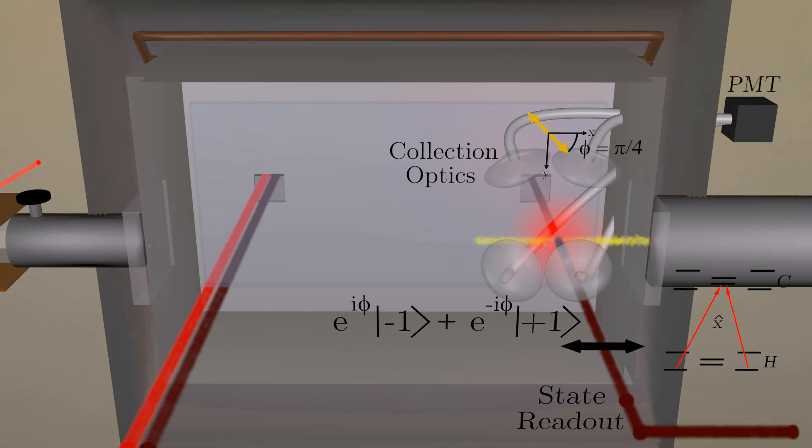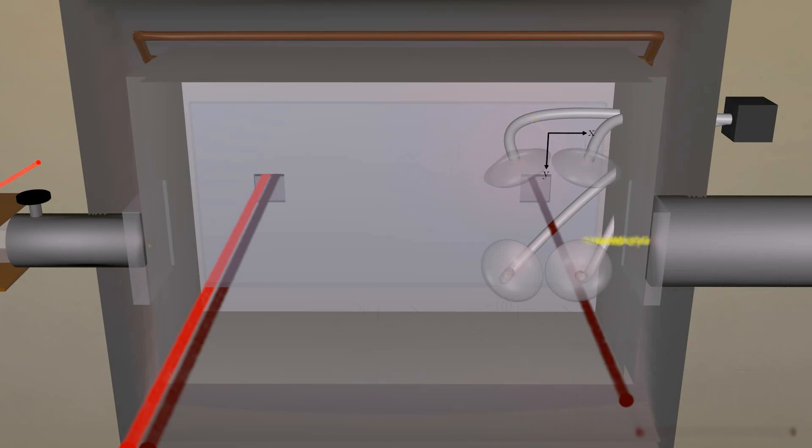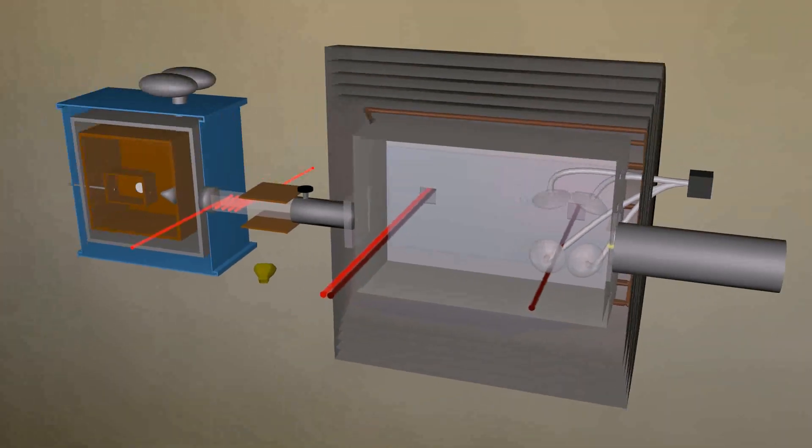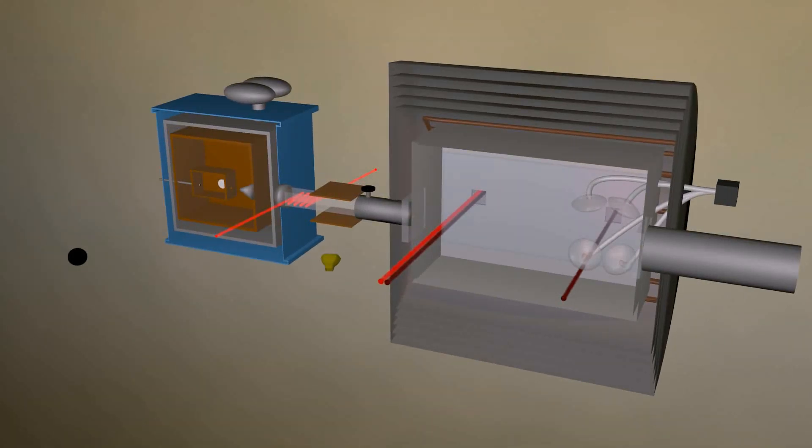The laser is rapidly switched between two orthogonal linear polarizations. By comparing the fluorescence induced by each laser polarization, we can deduce the spin precession phase. This type of procedure allows us to measure the tiny phase that an electron EDM might produce.